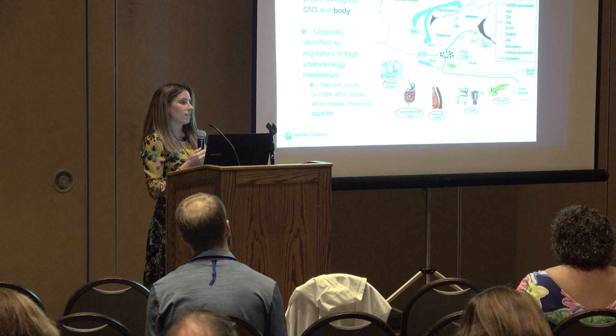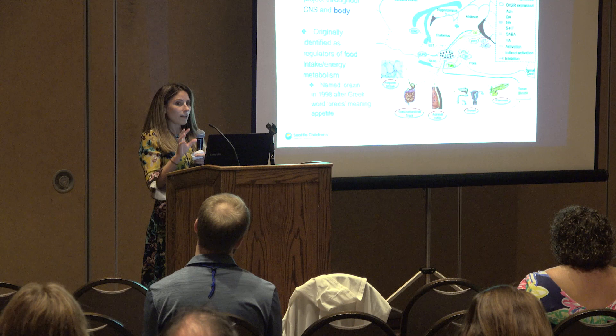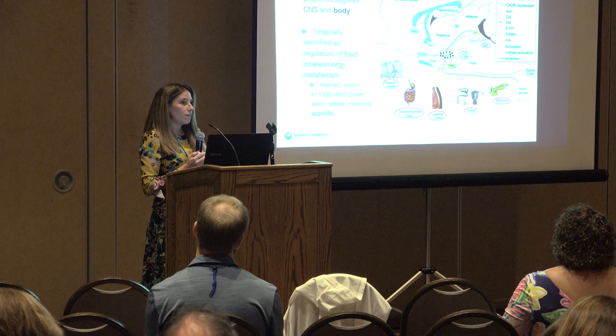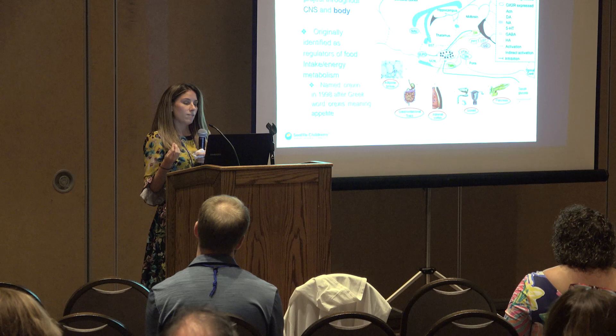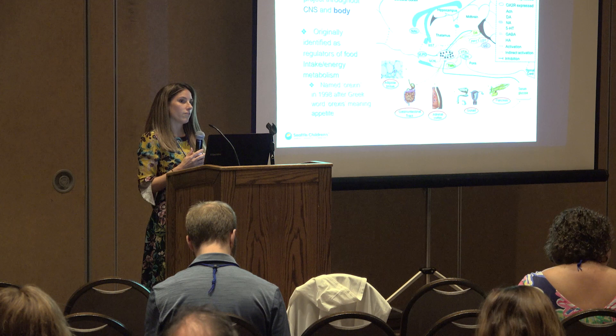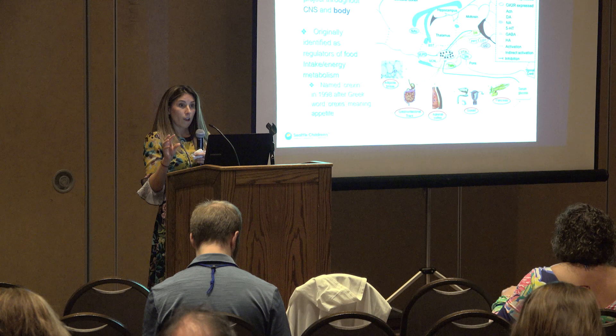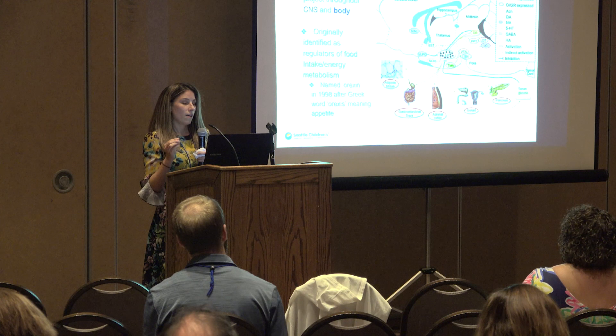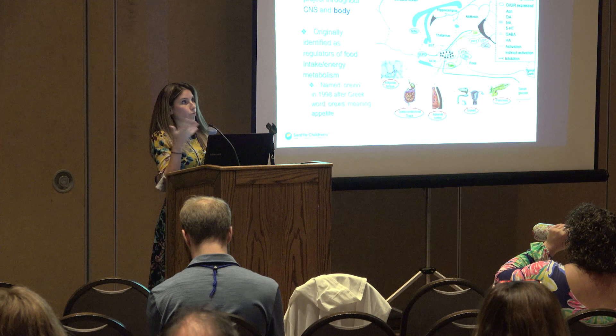Orexin and hypocretin are the same thing. Some lecturers say hypocretin, some say orexin — I tend to use orexin. Narcolepsy in humans is a loss of the neurons that produce orexin or hypocretin. These neurons are found in the hypothalamus, in the very middle part of the brain. They project to lots of other areas of the brain, affecting sleepiness and wakefulness. But these neurons also project to many other parts of the body — the orexin system has the most widely projected neurons we know of, which is why so many other things come with narcolepsy besides just a sleep-wake disorder.